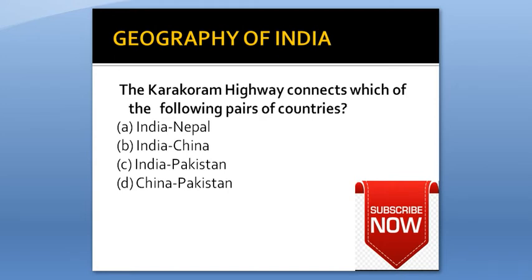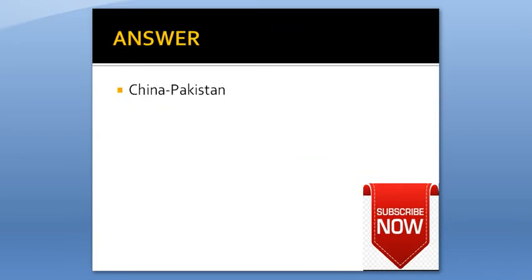The Karakoram Highway connects which of the following pairs of countries? Option A: India-Nepal. Option B: India-China. Option C: India-Pakistan. Option D: China-Pakistan. Answer is China-Pakistan.